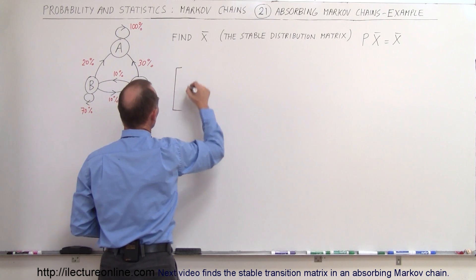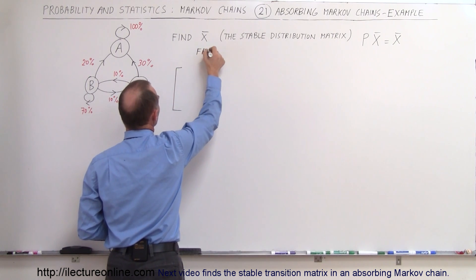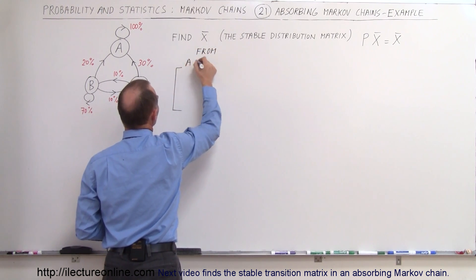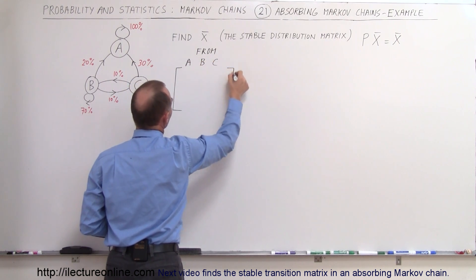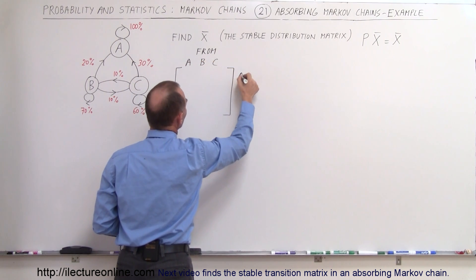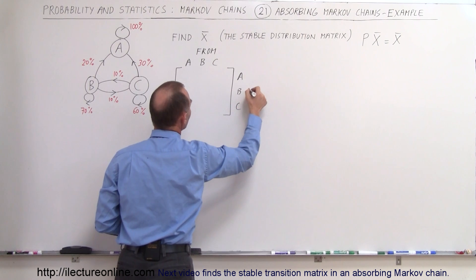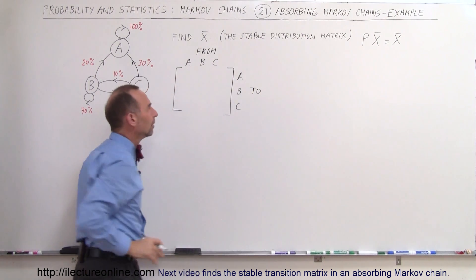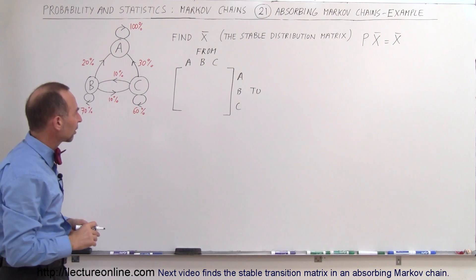In this case we're going to set up a matrix where we come from the three states A, B and C, and then we go to the three states A, B and C. So let's first build up our transition matrix.